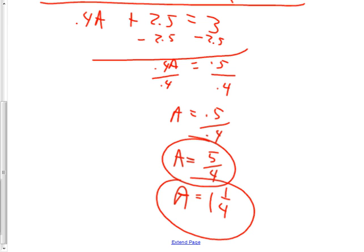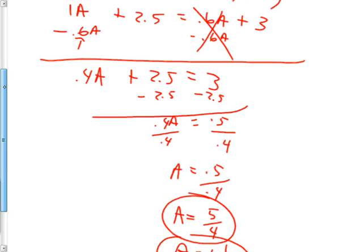1 and 1 fourth ounces of pure acid would bring this up to 60% acid. How many of you would have had that one right? All right. If you didn't, I hope you know why. I hope you see where your mistake was in there.